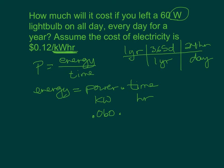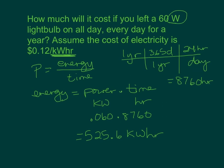Point oh six times 8,760 gives us 525.6 kilowatt hours, because we took our kilowatts, changed our watts to kilowatts, and this is the number of hours in a year. So kilowatts times hours makes kilowatt hours. Now we know how much energy we used.